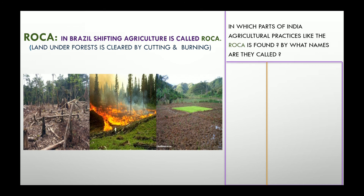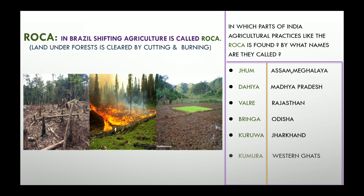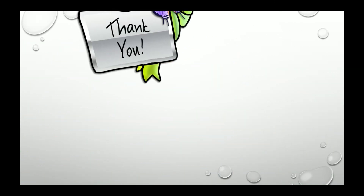In which parts of India is agriculture practice like Roca found and by what names is it called? In Rajasthan it is called Valray; in Odisha it is called Bringa; in Jharkhand it is called Kuruva; in the Western Ghats — covering parts of Maharashtra, Goa, and Karnataka — it is called Kumura; and in Andhra Pradesh shifting cultivation is called Podu. I hope you have understood all the map-related queries. Keep watching, thank you.